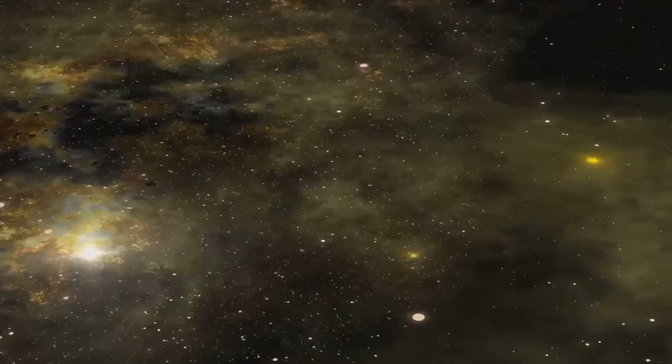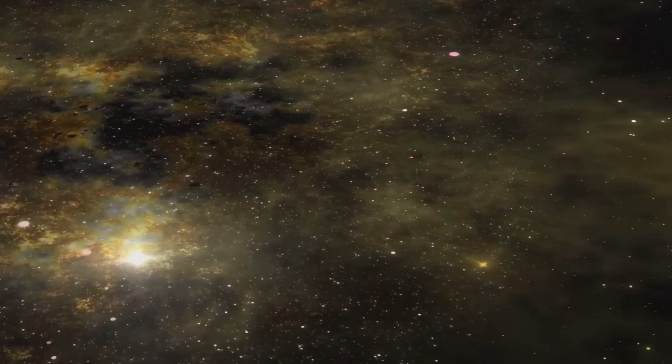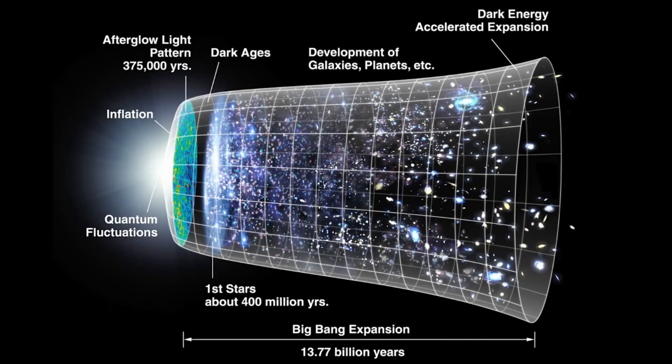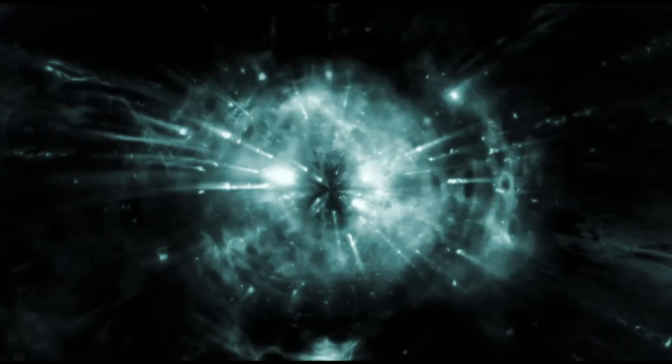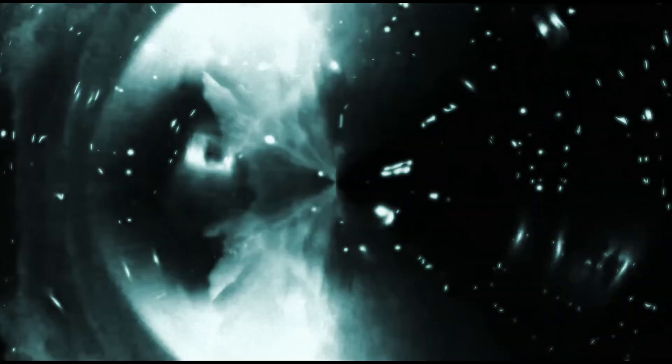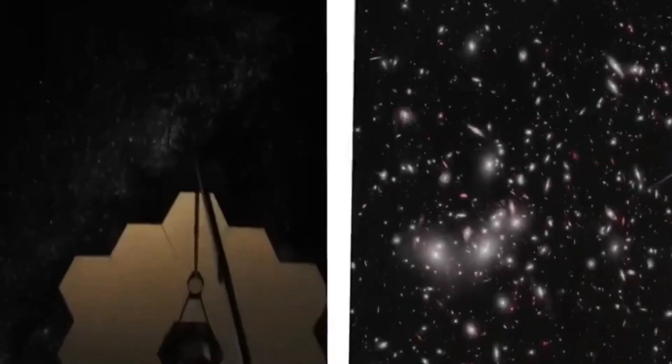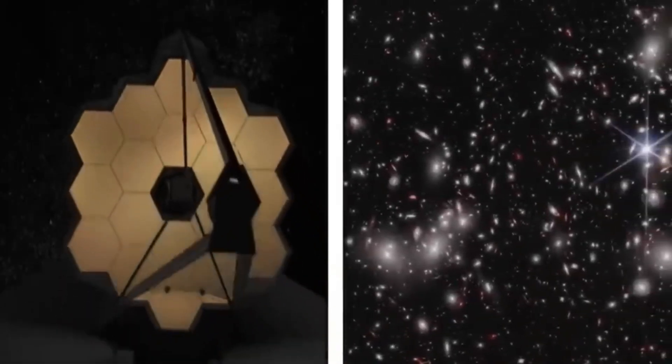The twin pillars of modern physics are Einstein's general relativity and quantum theory. To understand how the Big Bang emerged and what came before it, it is essential to unite Einstein's theory with quantum theory. Only if we obtain such a theory will we be able to answer the ultimate questions in cosmology, like what is space? What is time? What is the universe? And where did it come from?